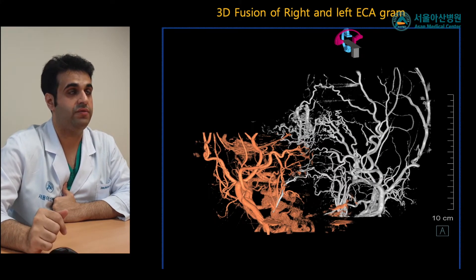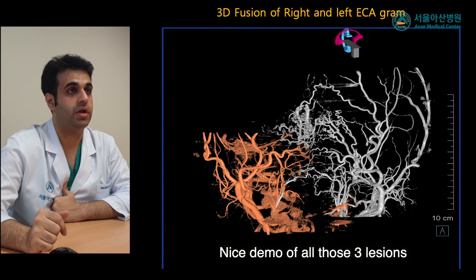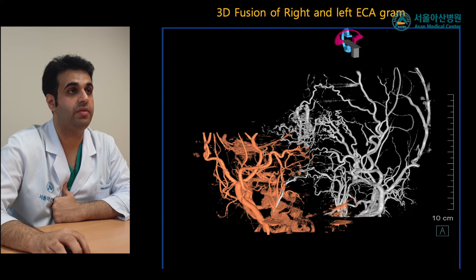The 3D fusion of the right and left external carotid artery angiograms demonstrated three locations of the fistula: the lateral sinus, the posterior condylar vein, and the torcular dural AV fistula.